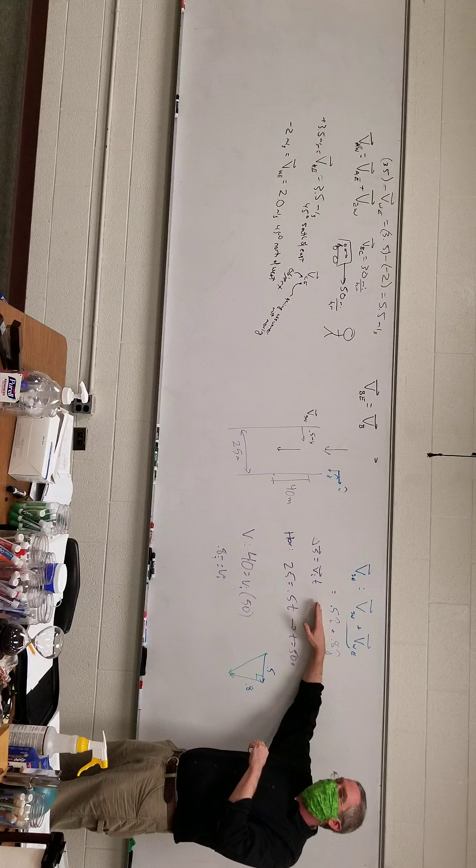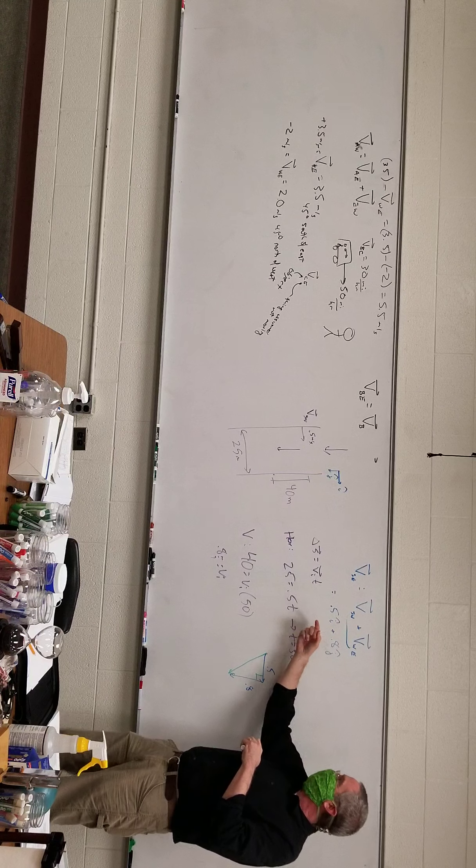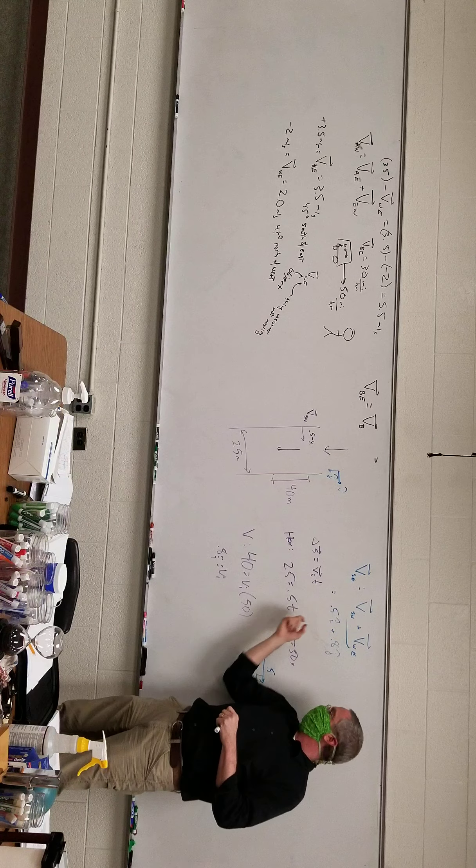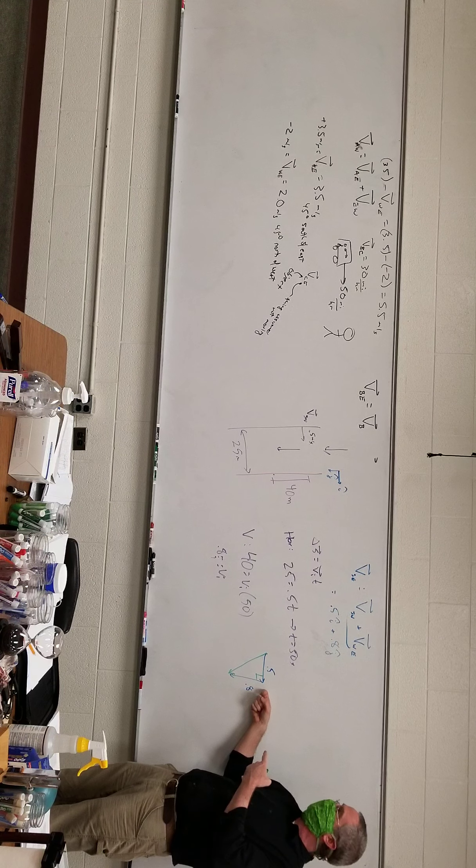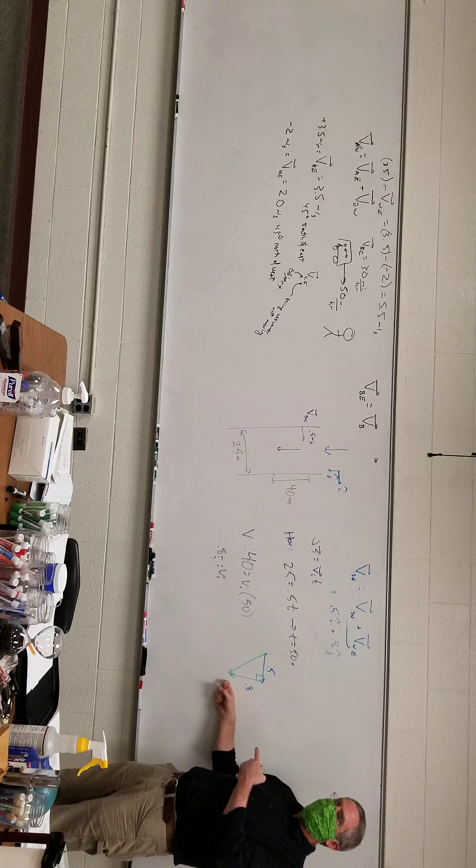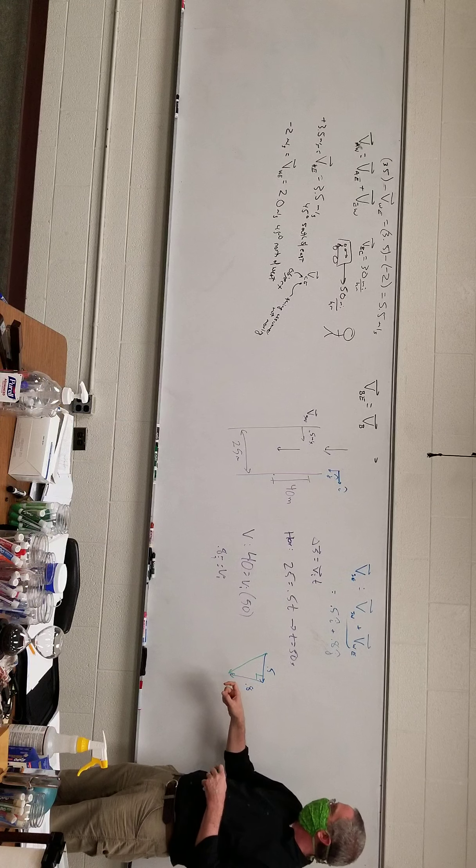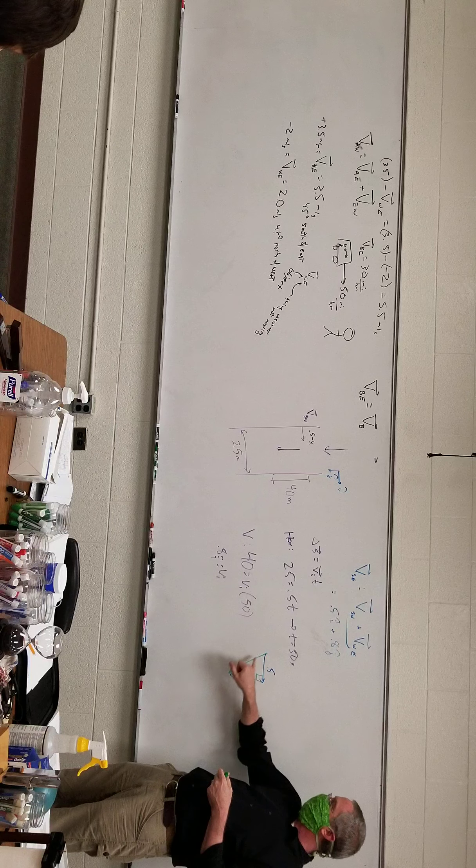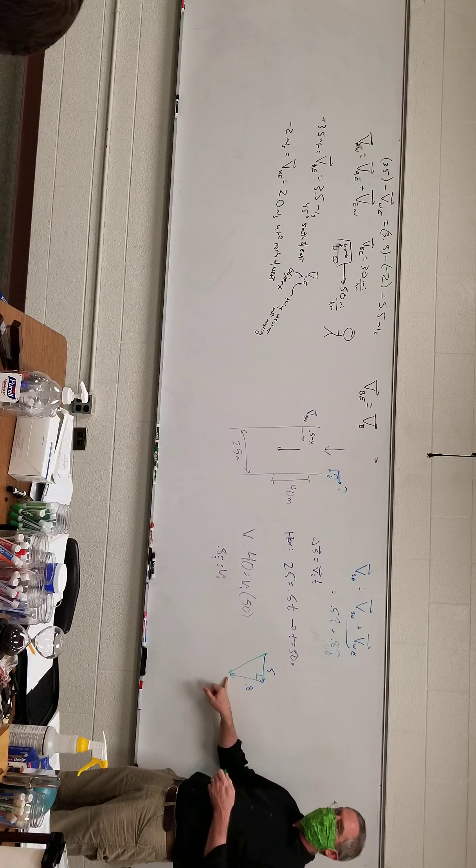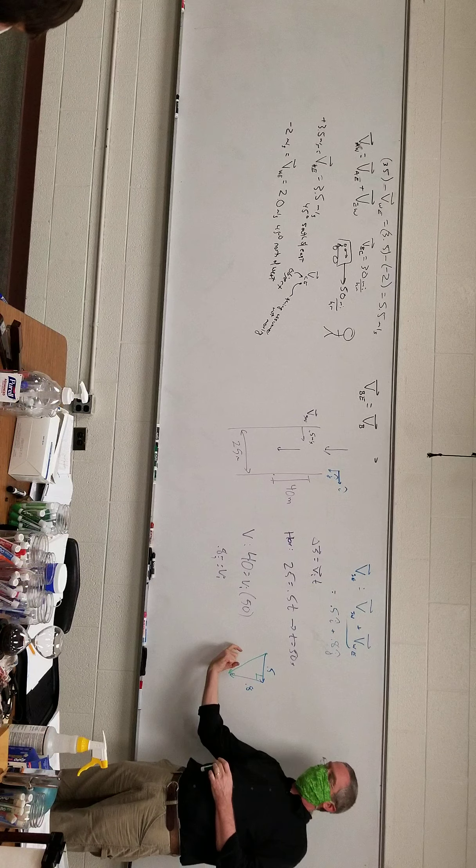When adding vectors head to tail, you draw one and that's the next starting point for the next vector which you then add. And so the resultant, the sum, is a vector from where you started to where you ended. And so speed is just asking for the magnitude of this.